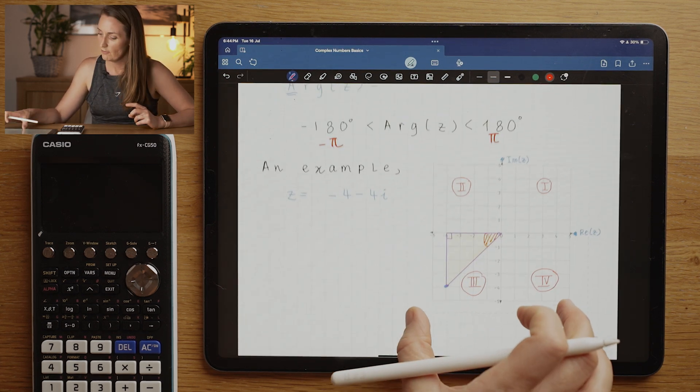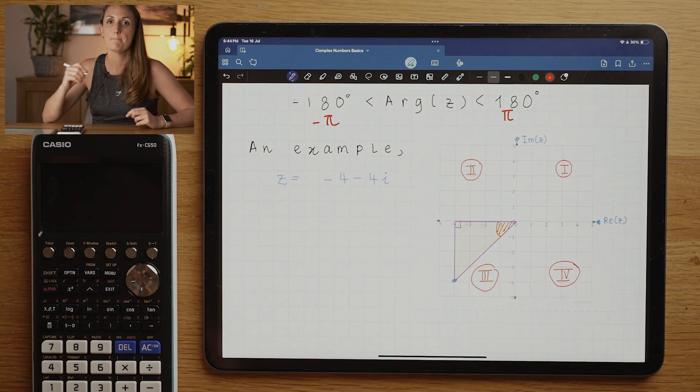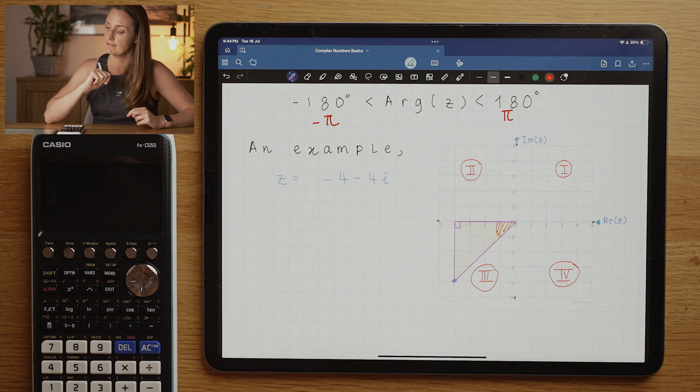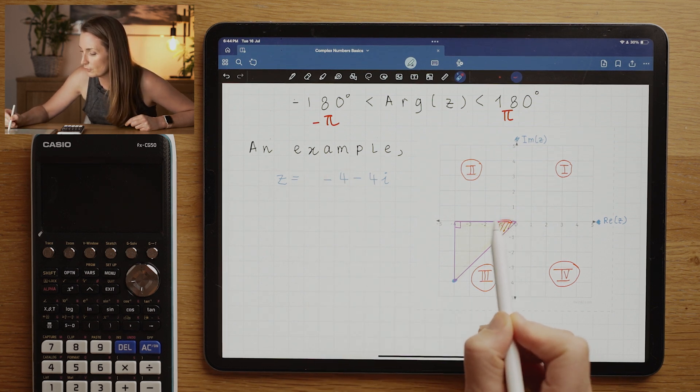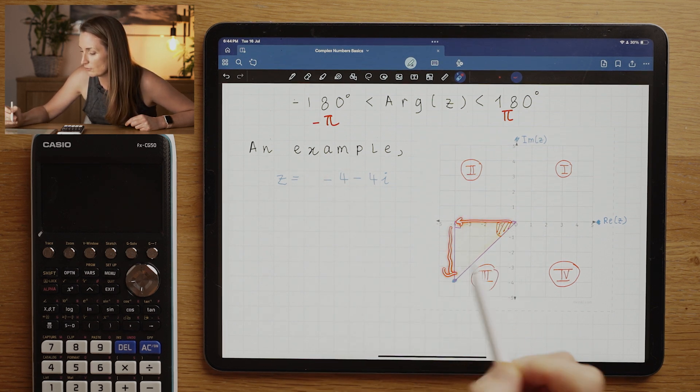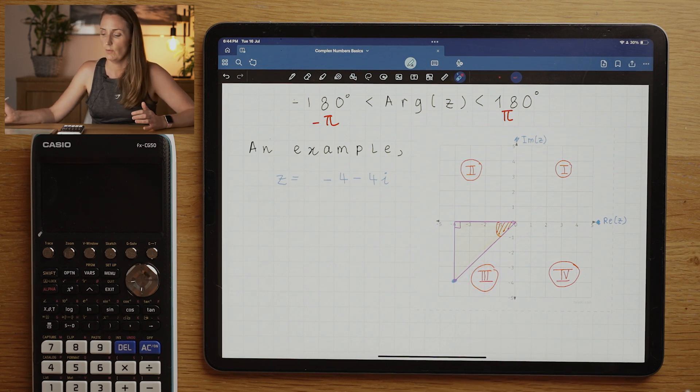If we had to write minus four minus four i and find its principal argument—remember that's the capital A—we would draw this as follows. We would go from minus four here in the real and down by minus four.